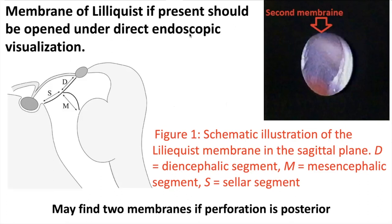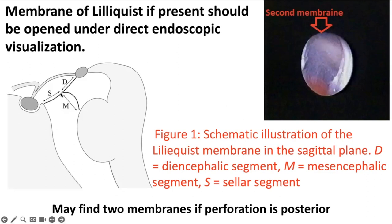The Liliequist membrane, if present, should be opened under direct endoscopic visualization. One should know its parts: it has a sellar segment, diencephalic segment, and mesencephalic segment. If the perforation is made posteriorly, one may encounter two membranes — the diencephalic and mesencephalic segments. If the perforation is made a little anteriorly, only one segment will be encountered.